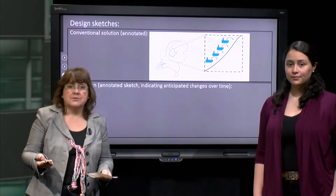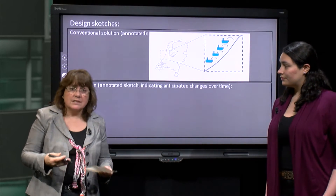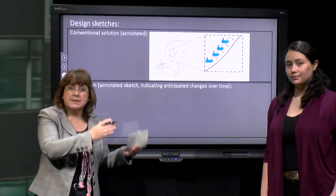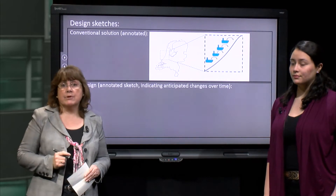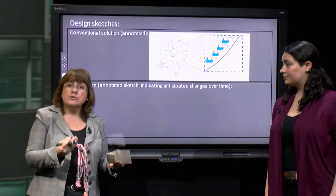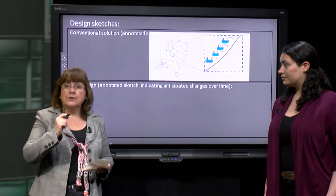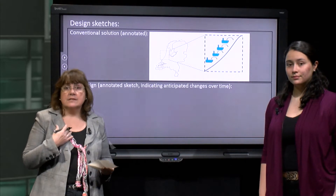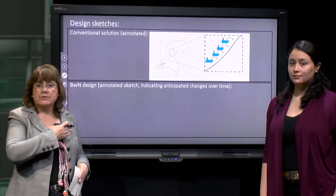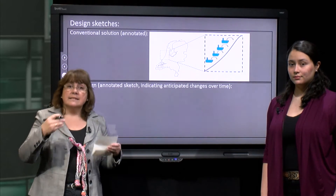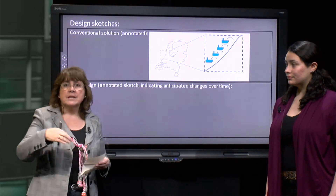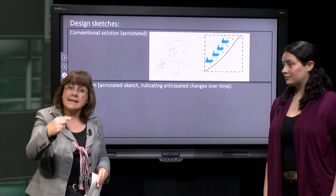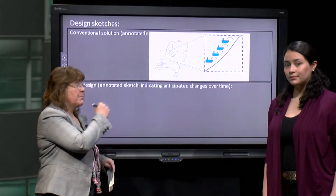Now let's go to step 2. We'll start by sketching a conventional solution. Conventional solutions tend to fulfil the explicit engineering and societal requirements quite effectively, so they form a good point of comparison in learning how to do your building with nature designs. In our case, the conventional design is a sand nourishment strategy for a stretch of coast. This means that every three to five years, dredgers return to deposit another load of sand in the near shore zone, but at a slightly different location. Have a look at our pre-prepared sketch.